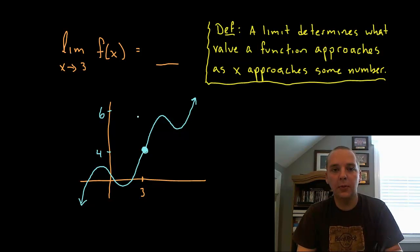So we'll start off with a pretty easy example like this. Here's f of x, this is the blue line here, and I want to know what's the limit, or in other words what does the function approach as the x's get closer to 3. And I went ahead and wrote this definition down because it's going to be important in a minute. A limit determines what value a function approaches as x approaches some number.